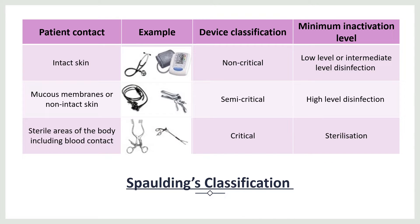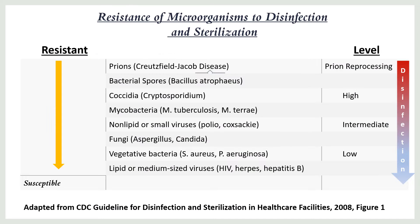Non-critical instruments are those in contact with intact skin. Semi-critical instruments are in contact with non-intact skin and mucous membranes, while critical instruments are those which enter into sterile areas of the body. An example of a non-critical instrument is a sphygmomanometer; semi-critical examples include laryngoscope blades; and critical examples include surgical instruments. Critical instruments require sterilization, semi-critical require high-level disinfection, while non-critical require low to intermediate level disinfection.